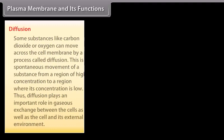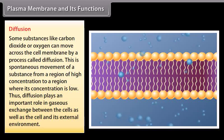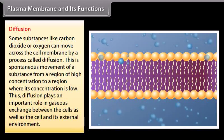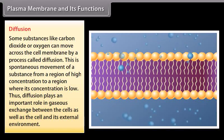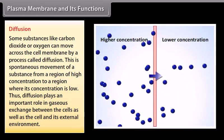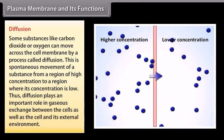Diffusion: Some substances like carbon dioxide or oxygen can move across the cell membrane by a process called diffusion. This is the spontaneous movement of a substance from a region of high concentration to a region where its concentration is low. Diffusion plays an important role in gaseous exchange between the cells as well as between the cell and its external environment.